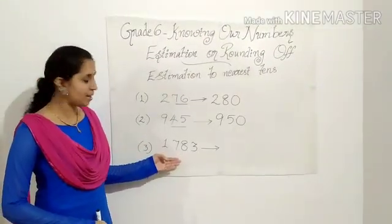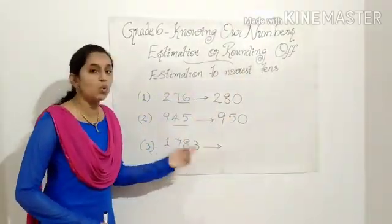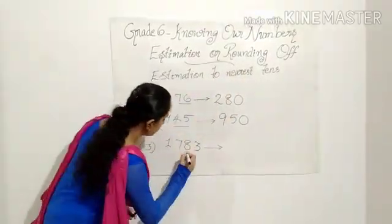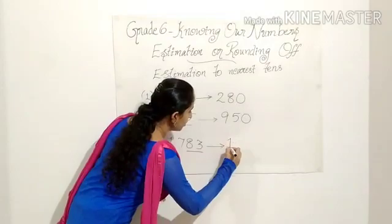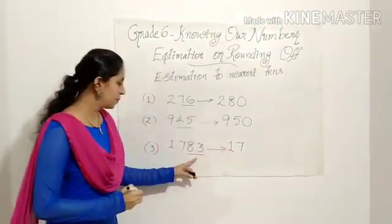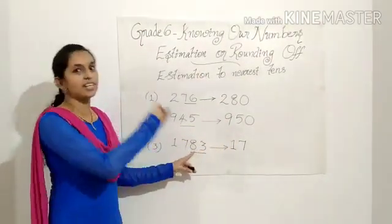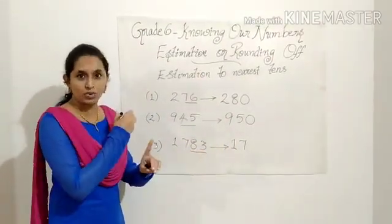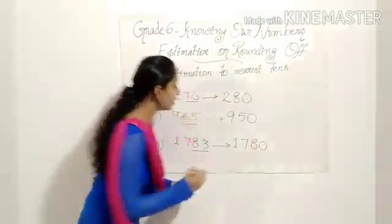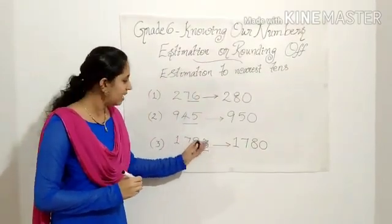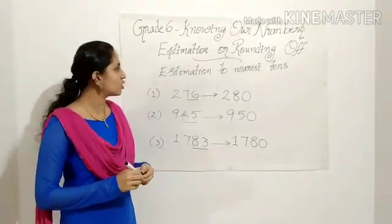The last example is 1783 — estimate to nearest 10. You have to look only at the last two digits, which is 83. The first two digits, 1 and 7, remain unchanged. 83 lies between 80 and 90, and you know 83 is near to 80, not 90. So 83 changes to 80, and the answer is 1783 estimates to 1780. That is estimation to nearest 10.